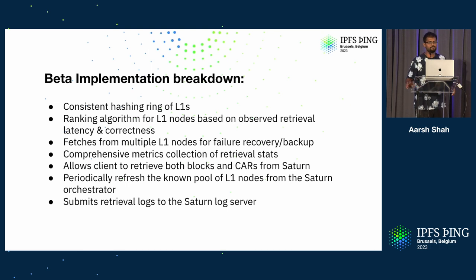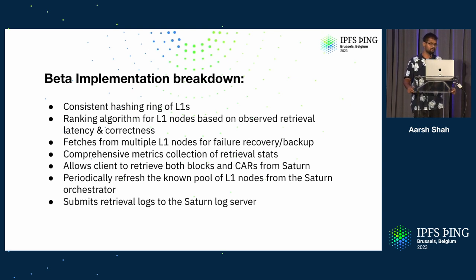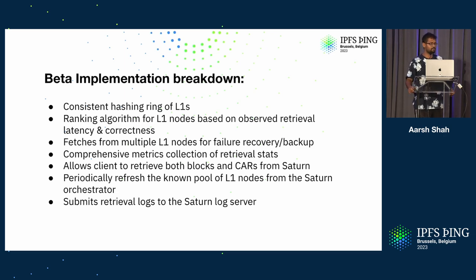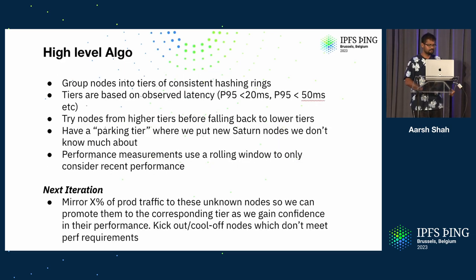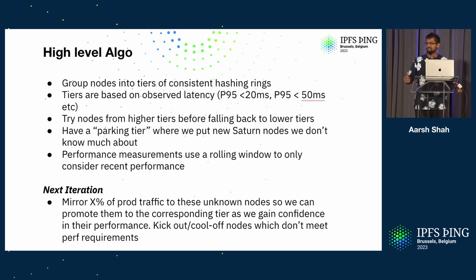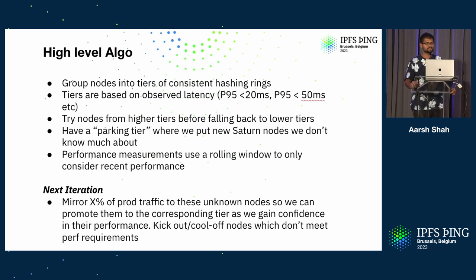Building this client on top of a distributed system where nodes come and go, nodes are unreliable, nodes might be slow, is not exactly trivial. We're constantly tuning the ranking algorithm to get optimal performance out of it. Consistent hashing works well when there's low churn in the network, but if there's high churn and some nodes are not as performant as others, there's no perfect algorithm out there today that can nail this down for you.